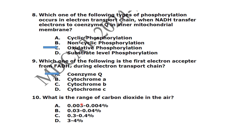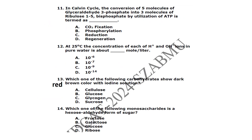What is the range of carbon dioxide in the air? The carbon dioxide range is 0.03 to 0.04 percent. In the Calvin cycle, the conversion of five molecules of glyceraldehyde-3-phosphate into three molecules of ribulose-1,5-bisphosphate by utilization of ATP is termed as regeneration.